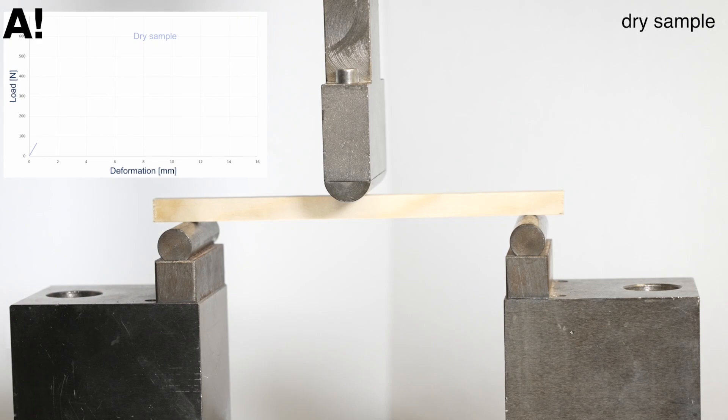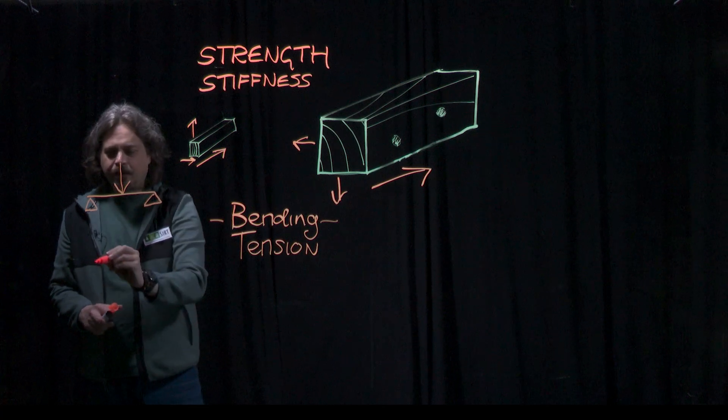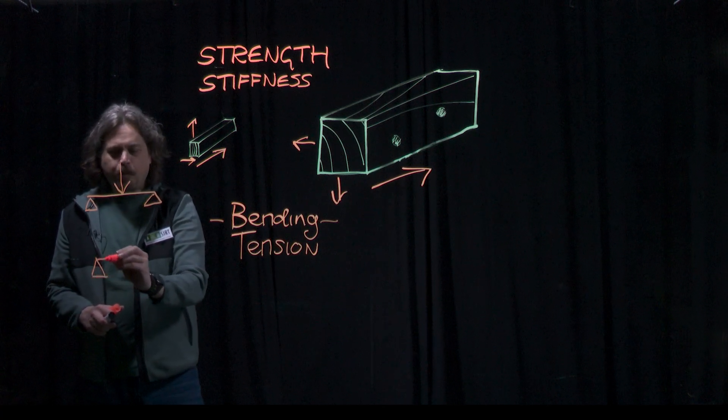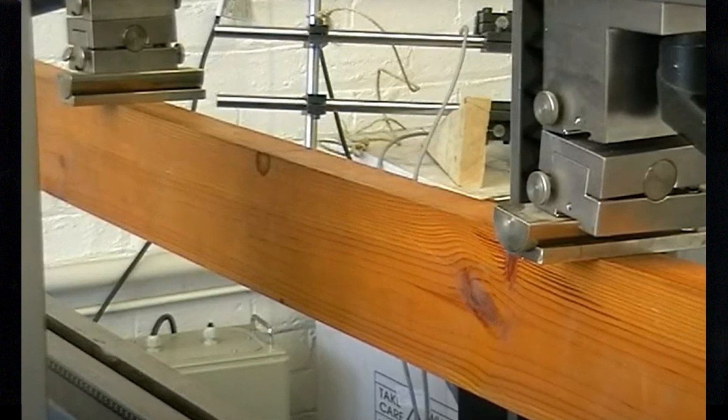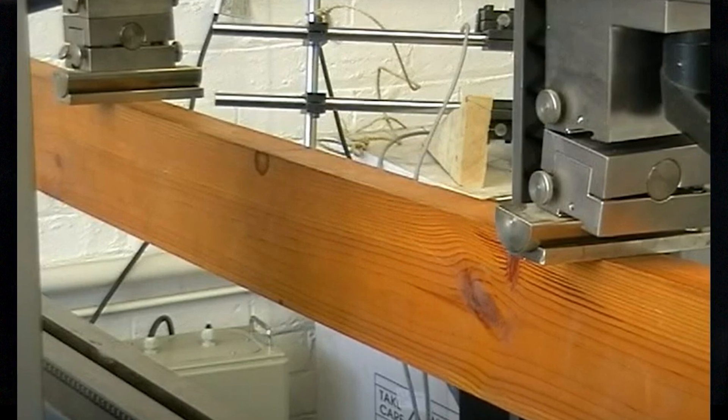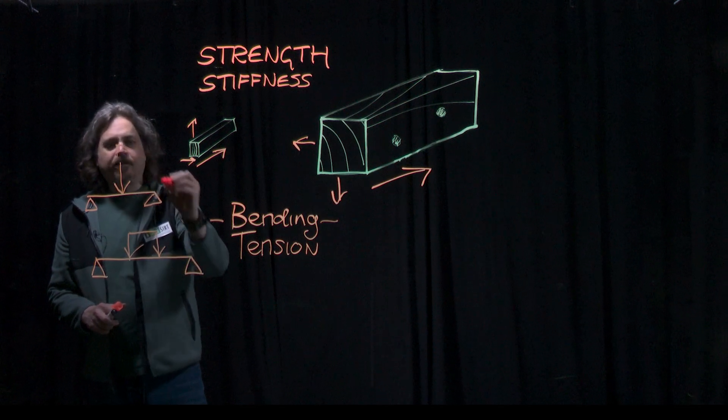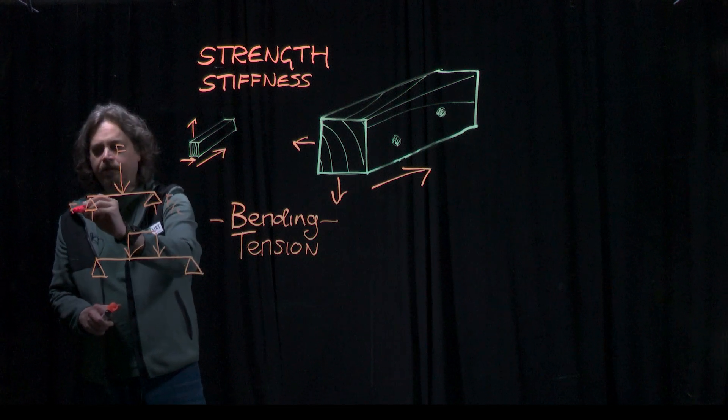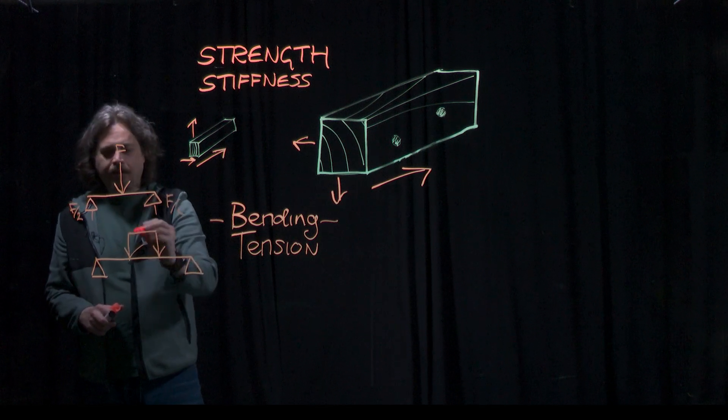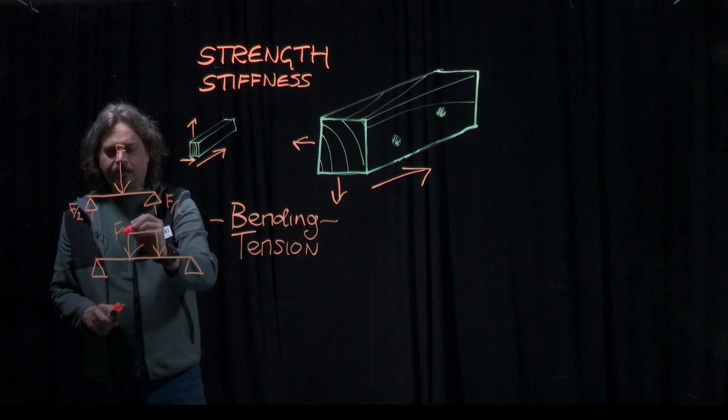And for full structural size, usually we're doing in Europe four-point bending test. A four-point bending test has two points of support and two points of equal load. So that's F and that's F over 2 because it's symmetrical, and here each of these is F over 2.